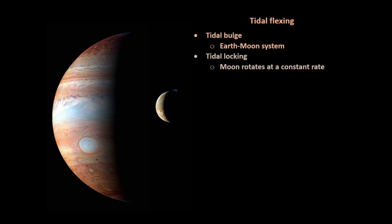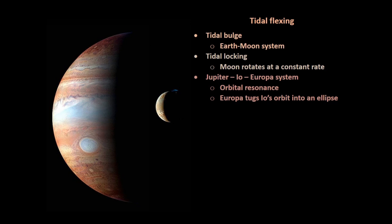We'll then move to talking about the Jupiter-Io-Europa system. Europa is another moon that orbits Jupiter. They have orbital resonance, which means they sync up periodically as they orbit. This syncing up of orbits means that Europa tugs Io's orbit into an elliptical shape.